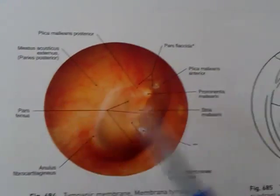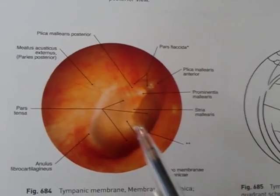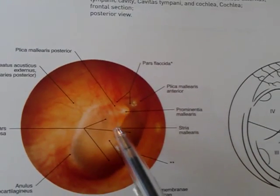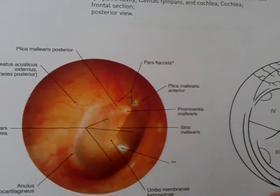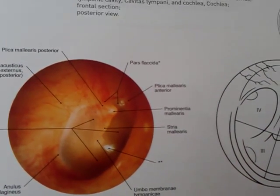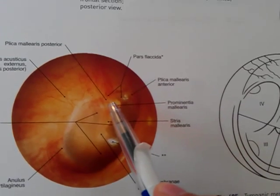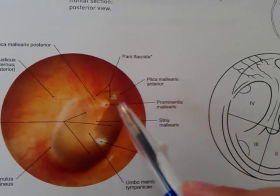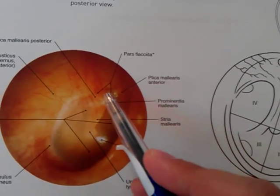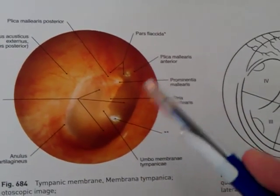Here we have a picture of the tympanic membrane. The center is drawn inwards by the attachment of the handle of the malleus. The convexity of the inner surface is called the umbo. The tympanic membrane shows two small folds — anterior and posterior mallear folds — bordering the triangular pars flaccida. The chief part is called the pars tensa.